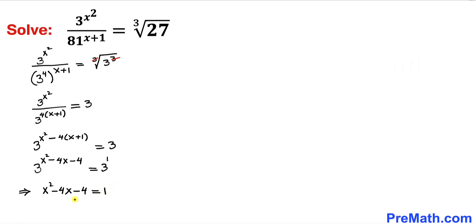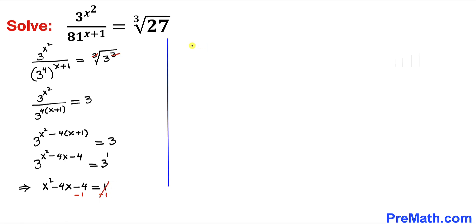Now let's go ahead and subtract 1 from both sides. So therefore our left-hand side is going to become x squared minus 4x minus 5 equal to 0.